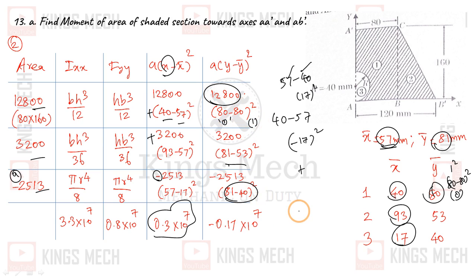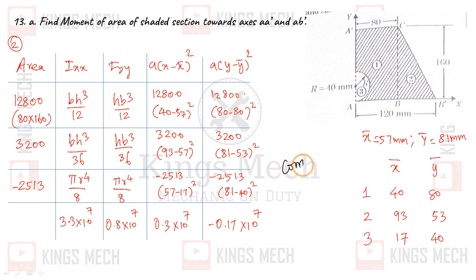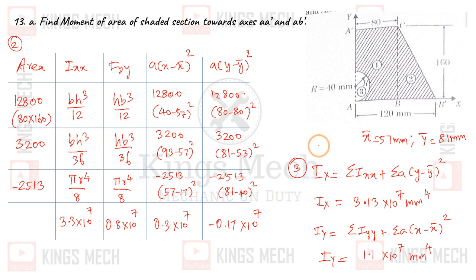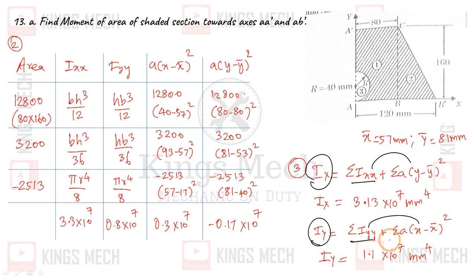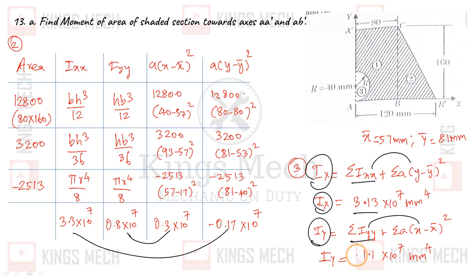The final summation IXX value is 0.17×10⁷. Summation IYY equals summation IYY(self) plus summation A×(x − x̄)². Similarly for IXX: the y − ȳ difference is used; for IYY: the x − x̄ difference is used. The final answers obtained are: IXX = 3.1×10⁷ mm⁴ and IYY = 1.1×10⁷ mm⁴.